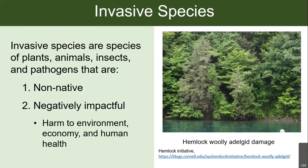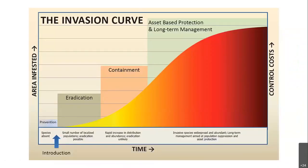Hemlock woolly adelgid is an insect from Asia that lives on and kills hemlock trees. That's a great concern for our forest resources — you can see the sort of grayed out trees. There's been a lot of research and theory looking into what invasion looks like across space and time and also how we can best manage these invasive species and all the problems they can cause.